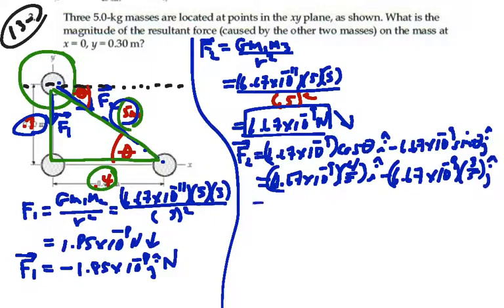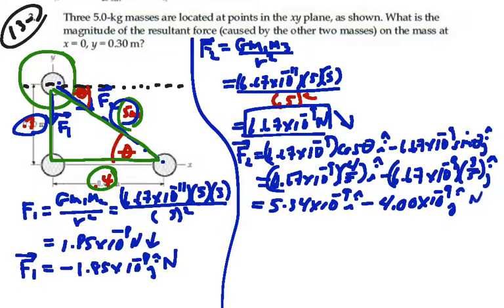So what are those values? I get 5.336 times 10 to the minus 9 i minus 4.00 times 10 to the minus 9 j newtons. That is our vector force F2.